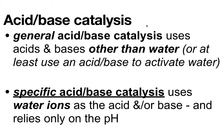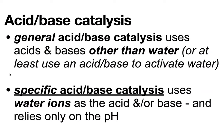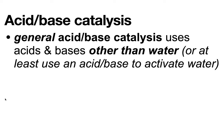A lot of enzymes use acid-base catalysis, but not all of them. Let's clarify general versus specific acid-base catalysis. Typically in enzymatic reactions we're dealing with general acid-base catalysis, where an amino acid acts as the general acid and/or base, sometimes working through water. In specific acid-base catalysis, the reaction relies only on water ions as the acid or base — it depends only on pH, using the natural concentration of hydronium and hydroxide ions at a given pH. With enzymes, we're typically dealing with general acid-base catalysis.